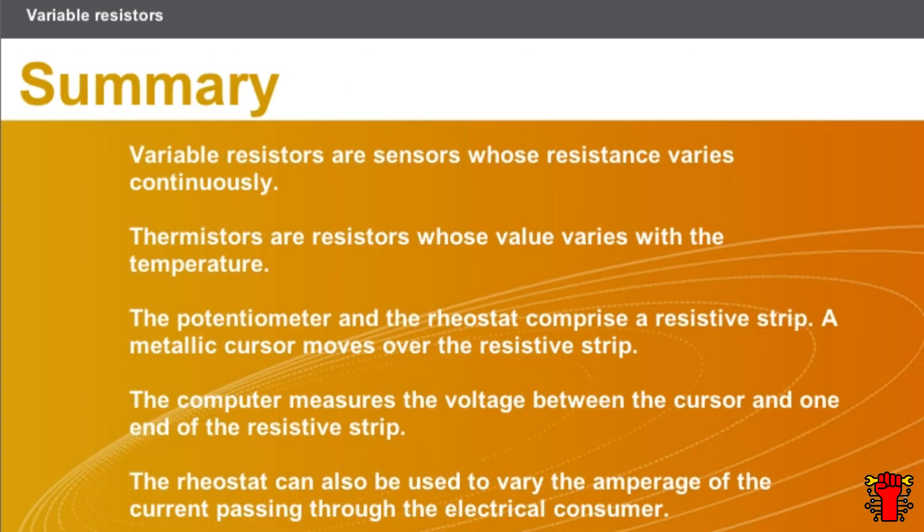In this chapter, we covered the following points: variable resistors are sensors whose resistance varies continuously. Thermostores are resistors whose value varies with the temperature. The potentiometer and the rheostat comprise a resistive strip, and a metallic cursor moves over the resistive strip. The computer measures the voltage between the cursor and one end of the resistive strip. The rheostat can also be used to vary the amperage of the current passing through the electrical consumer.